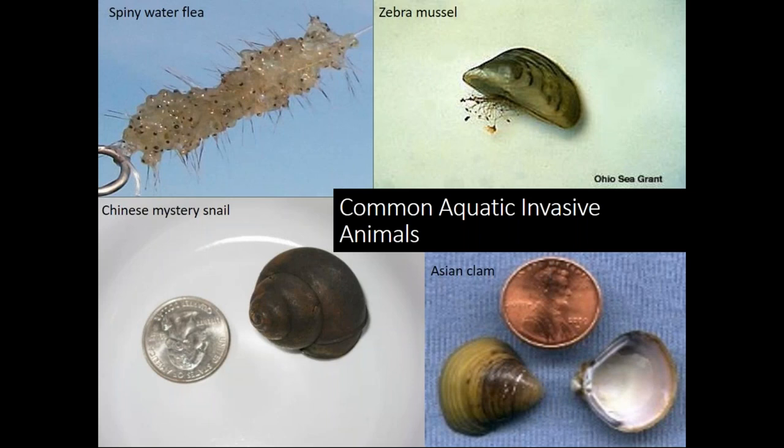Turning to invasive animals: spiny water flea is not in New Hampshire yet, but we have an active monitoring program. V-Lab lakes that have plankton samples taken are checked for them during plankton counts, and special studies target larger lakes since spiny water fleas are present in Lake Champlain in Vermont and Lake George in New York, and those boaters tend to visit our larger lakes.